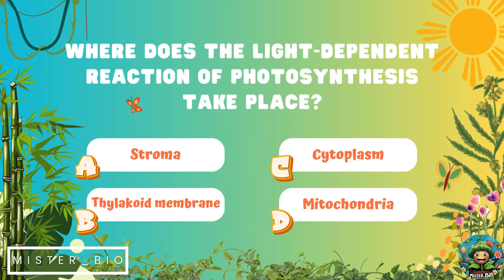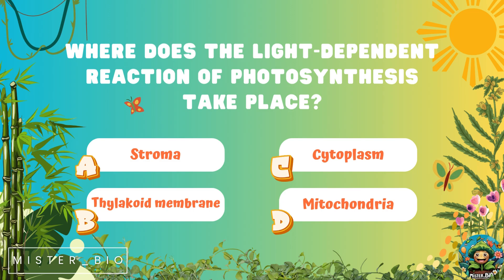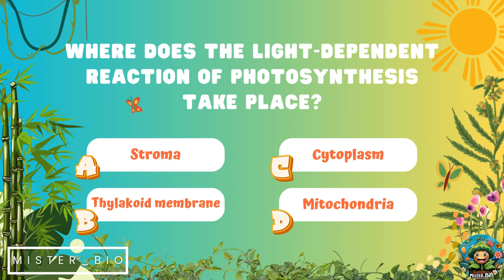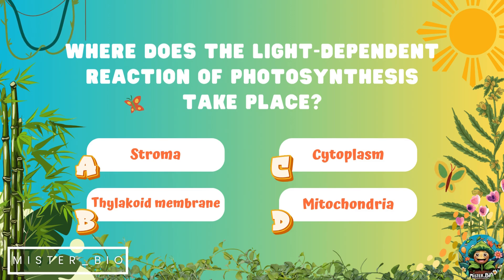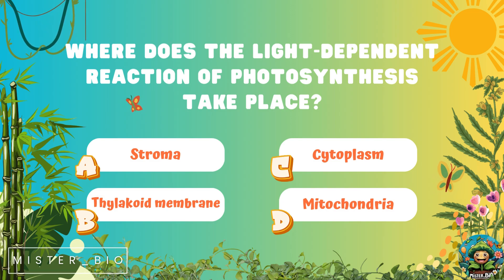First question: where does the light-dependent reaction of photosynthesis take place? A) stroma, B) thylakoid membrane, C) cytoplasm, or D) mitochondria.